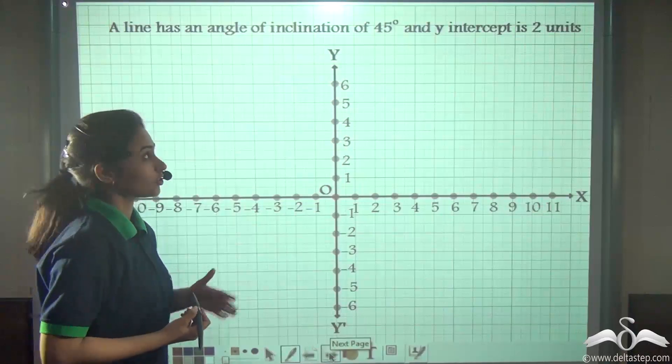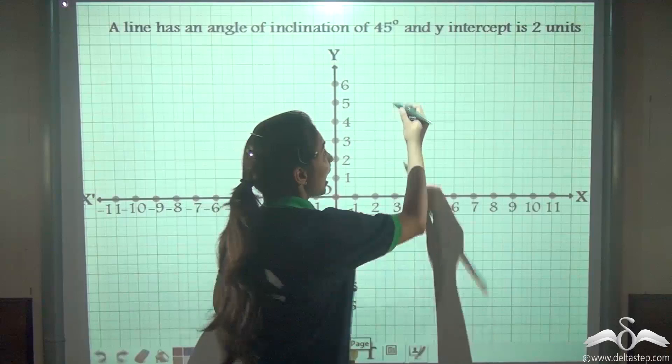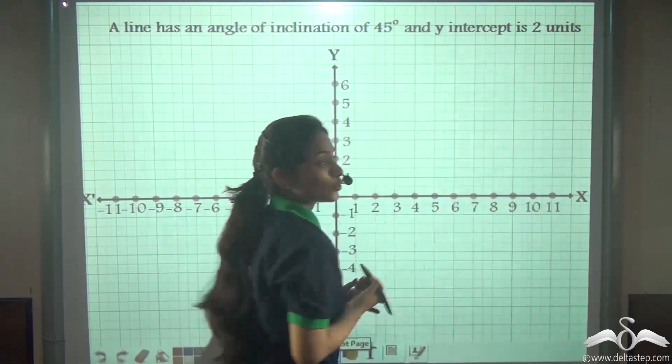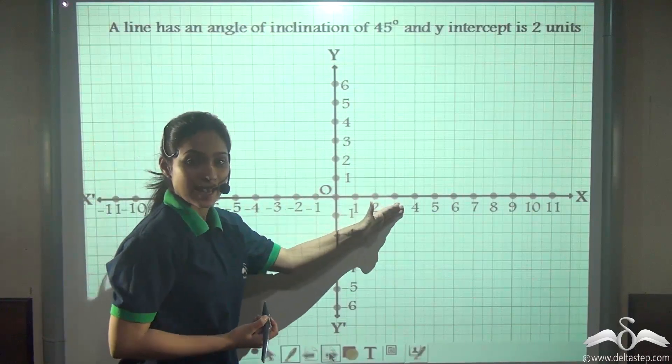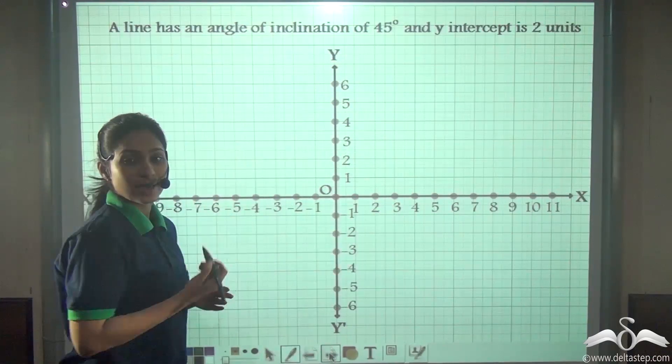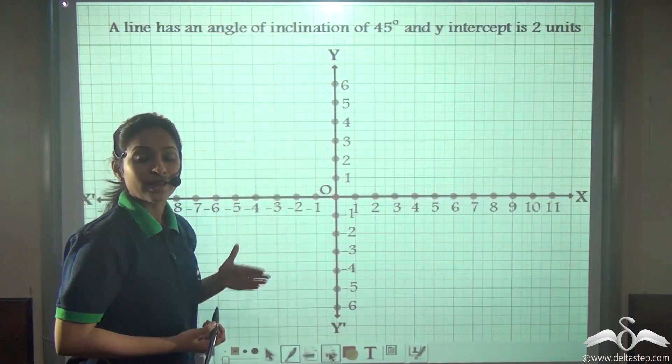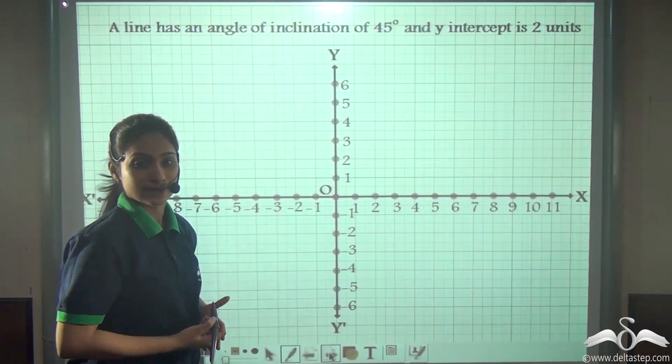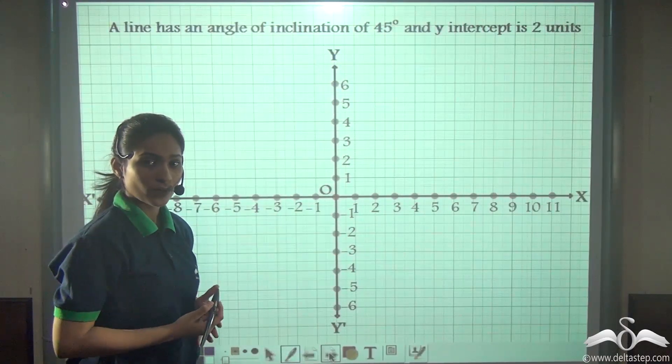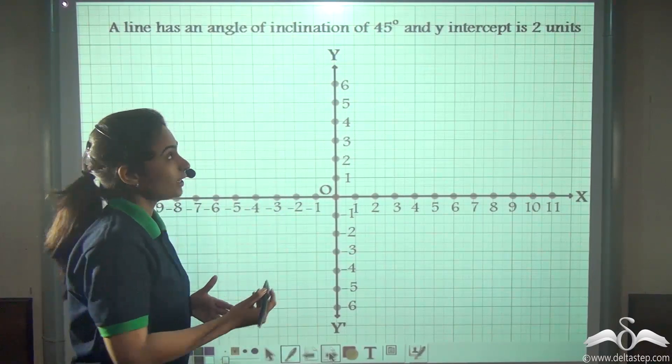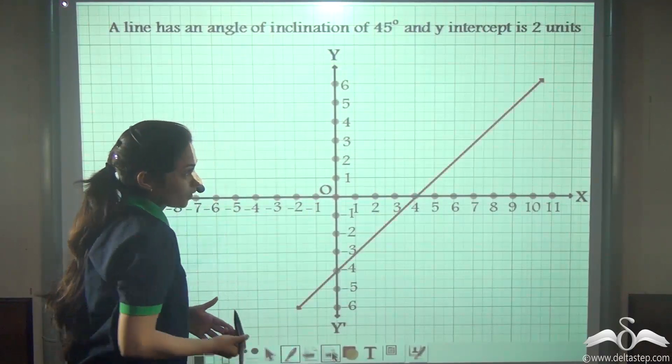Here we have been given information. A line has an angle of inclination of 45 degrees and y-intercept is two units. You know what is angle of inclination - the angle a line makes with the x-axis and y-intercept. What is y-intercept? The point on the y-axis where the line intercepts or cuts it. So with these two information, can you draw a line? Let me draw a line with the angle of inclination as 45.